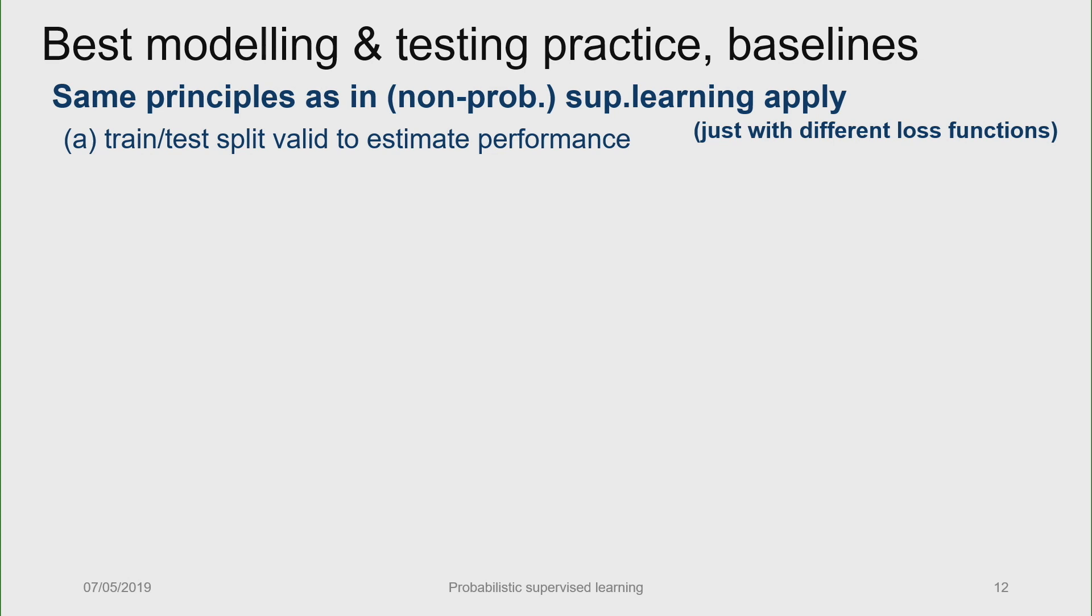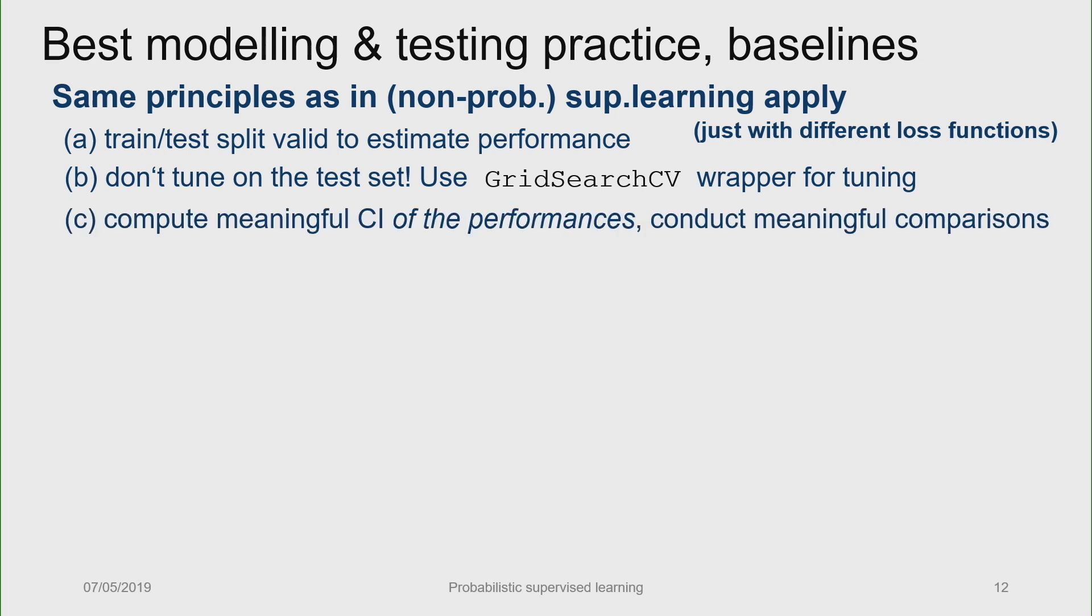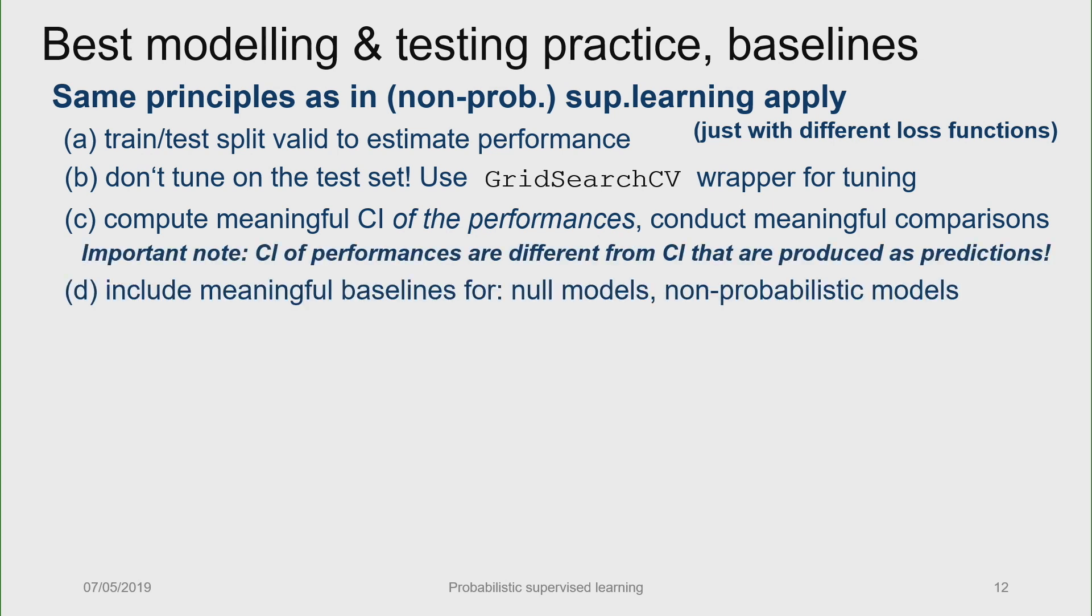Finally, best modeling and testing practice. So essentially, for estimating the goodness of the model, same principles as in non-probabilistic supervised learning apply. Train-test split, observing performance on the test set is still a valid principle. Still, you don't want to tune on the test set. It's difficult to enforce if you have off-the-shelf Bayesian models, so you want to be careful. Or if you use frequentist models, it's more hygienic if you use GridSearchCV to encapsulate the model and don't do anything manual about the test and validation split, and leave it to GridSearchCV, say, as in scikit-learn. Of course, computing meaningful confidence intervals for the performances and choosing meaningful baselines is also important. So just like in a non-probabilistic setting, though, of course, the question is, what are these meaningful baselines?